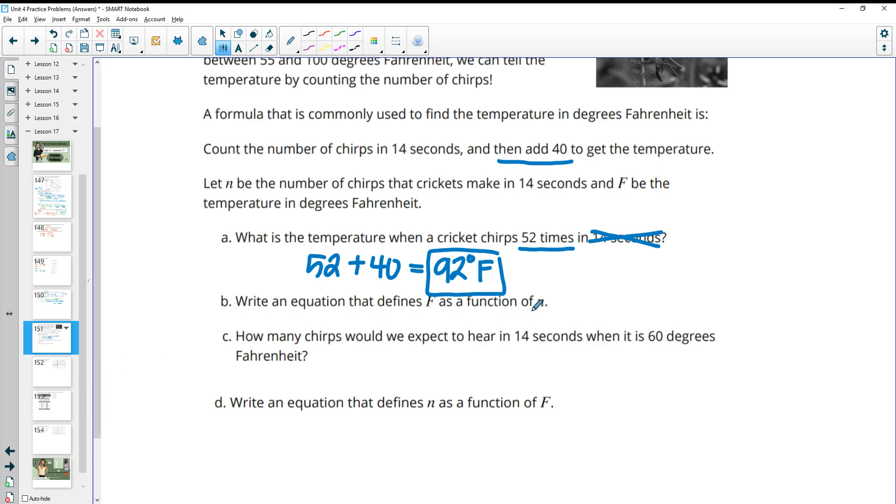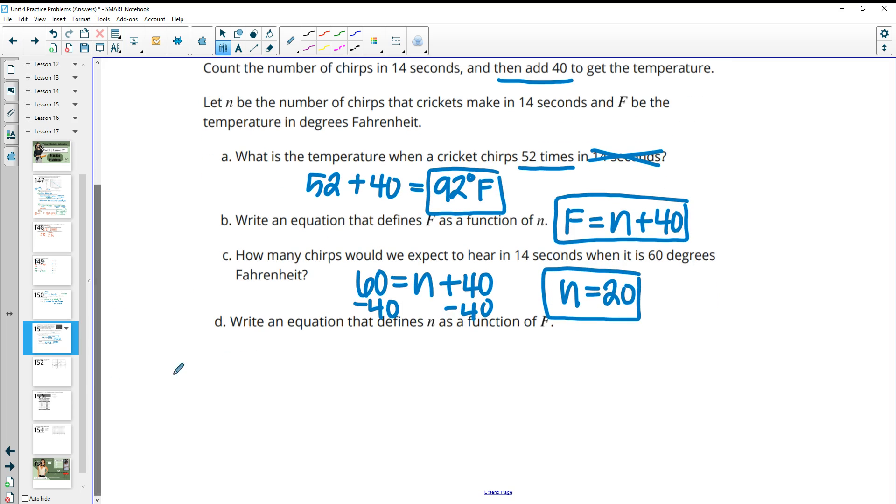So write an equation that defines F as a function of n. So F, the temperature that we got, equaled the number of chirps plus 40. So how many chirps would we expect to hear in 14 seconds when it's 60 degrees Fahrenheit? So then we put the temperature in for F and we don't know the number of chirps yet and then we add 40. So then we just subtract 40 and we get that the number of chirps would be 20. So if we hear 20 chirps in 14 seconds, it's about 60 degrees.